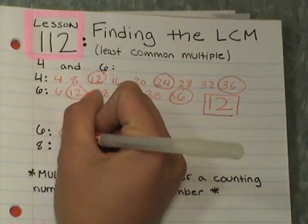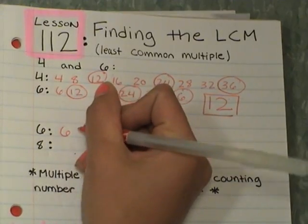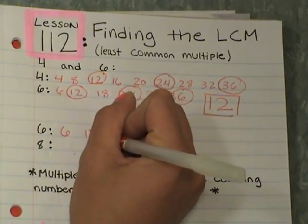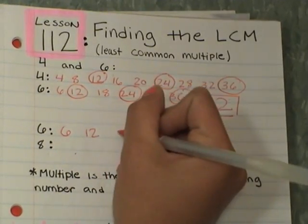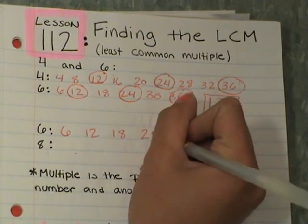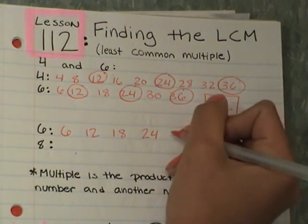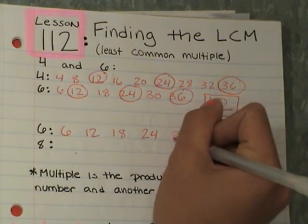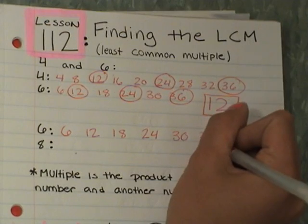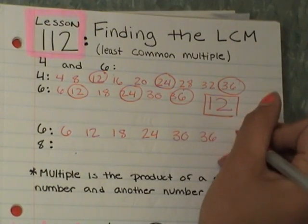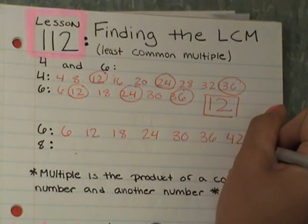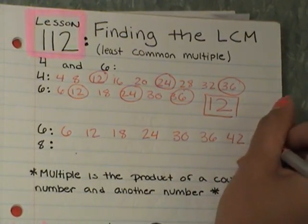So: 6 times 1 is 6, 6 times 2 is 12, 6 times 3 is 18, 6 times 4 is 24, 6 times 5 is 30, 6 times 6 is 36, 6 times 7 is 42, 6 times 8 is 48.